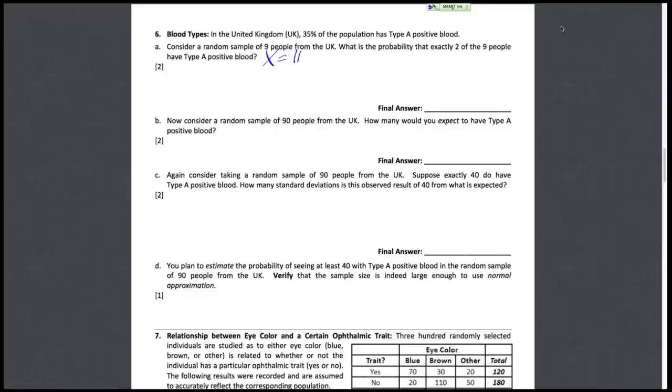If we let X be the number of people in the sample who are type A, then X follows a binomial distribution where N is nine and P is 0.35.